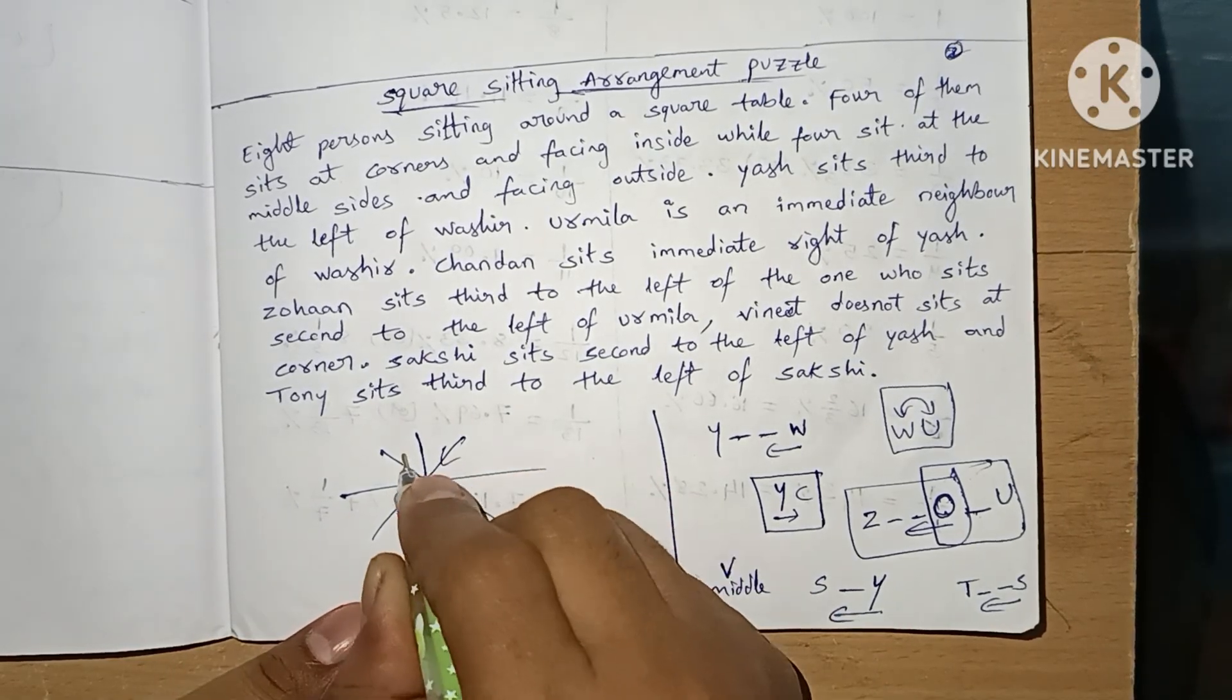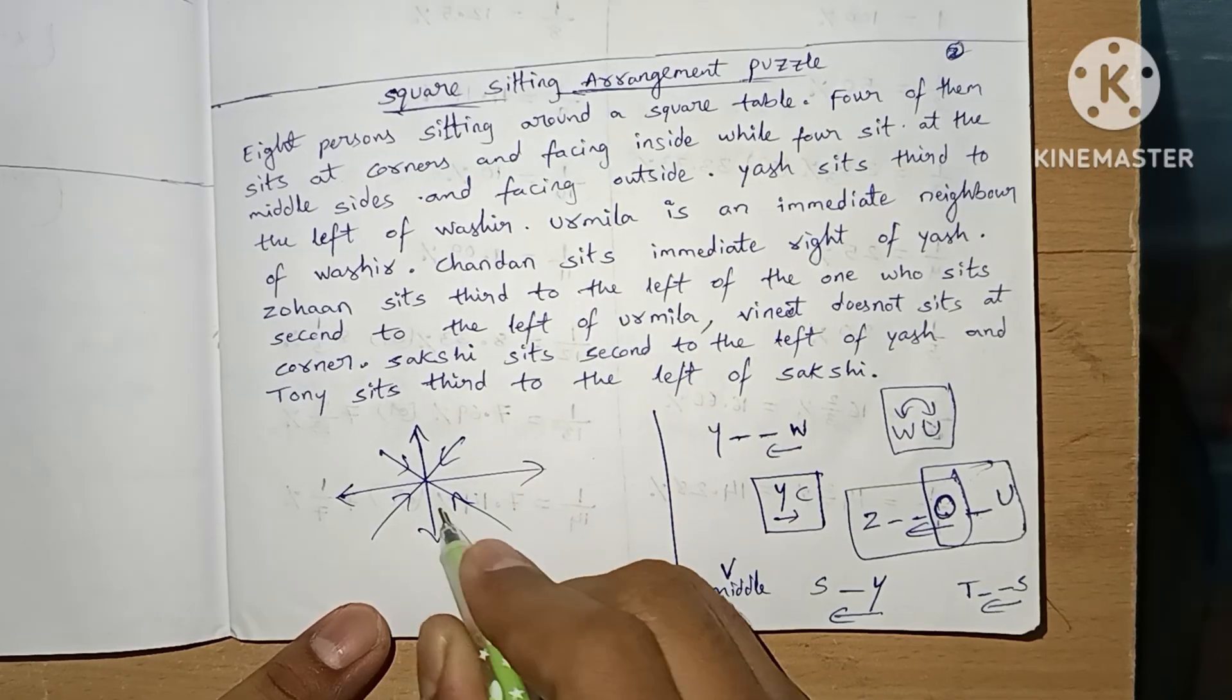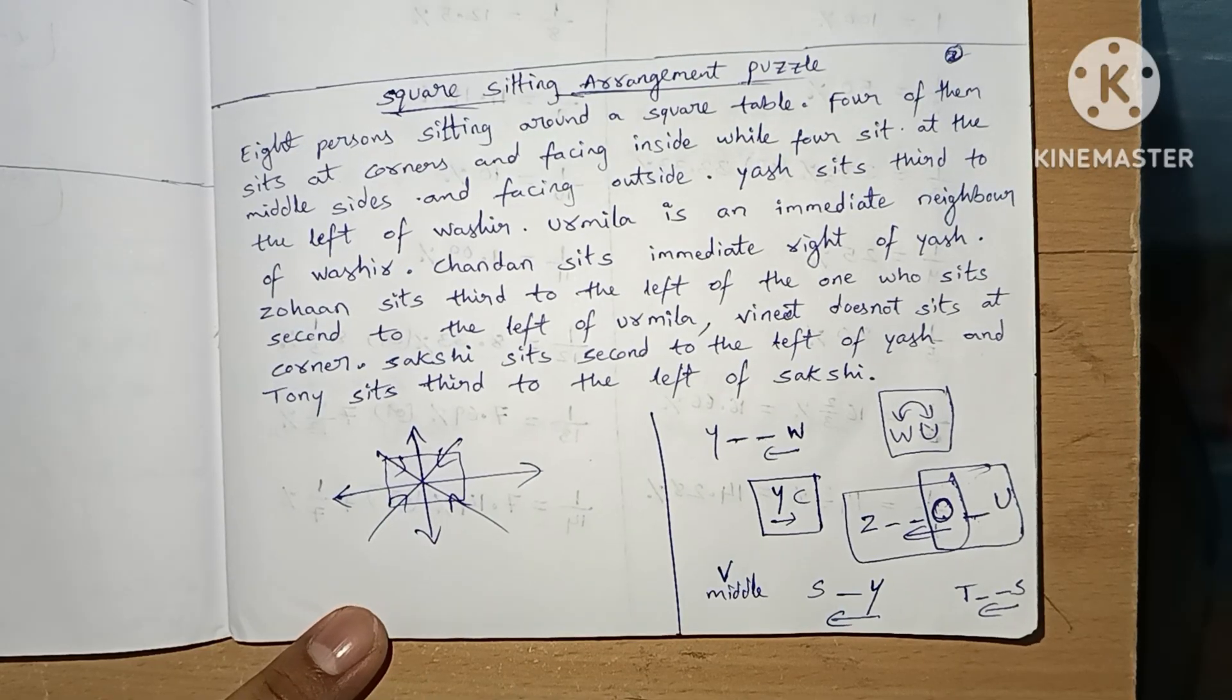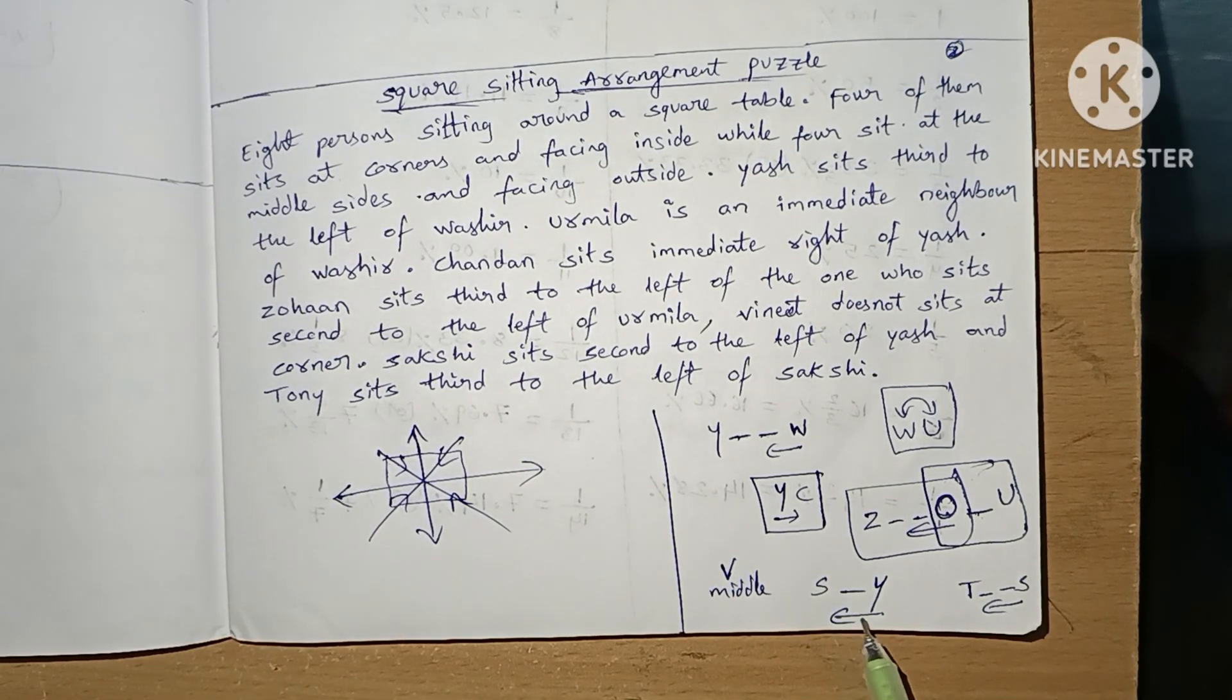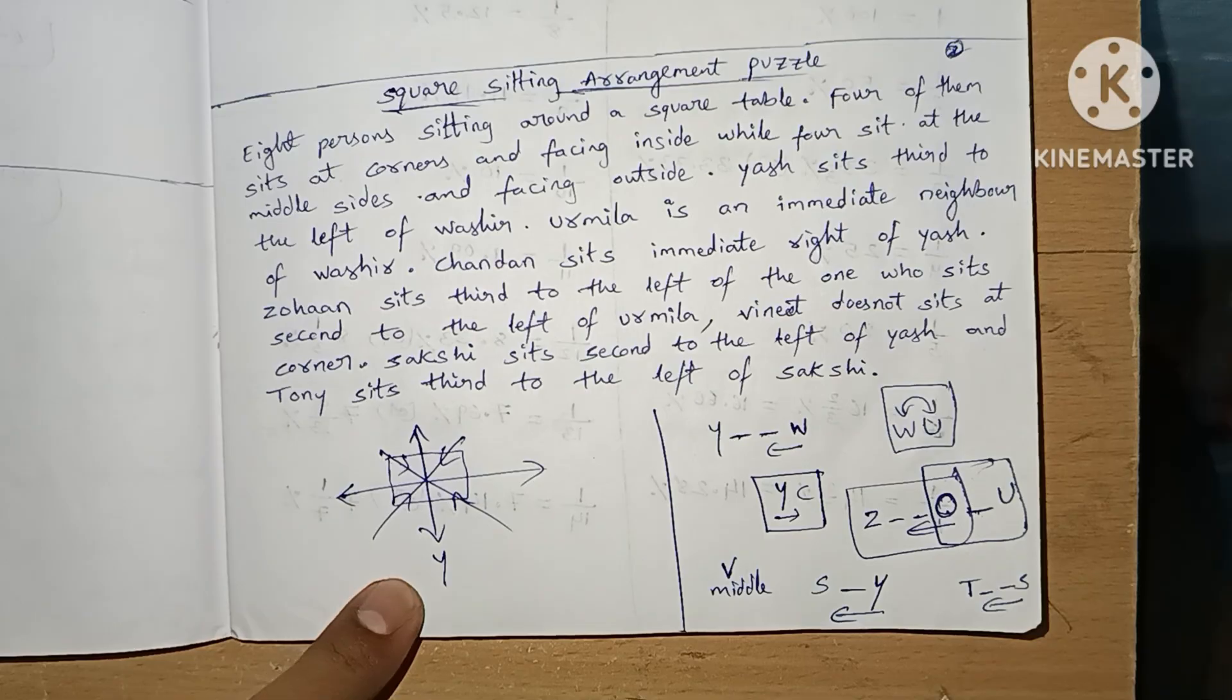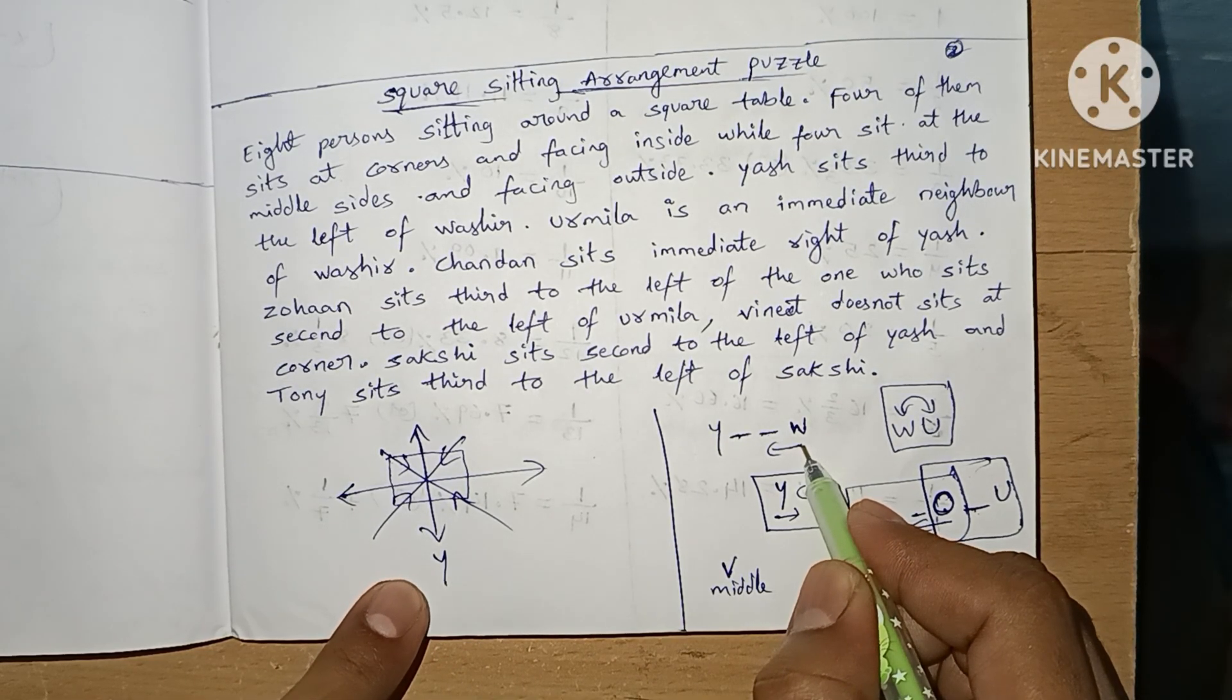Corners are facing inside, middle are facing outside. Why I draw this one? It is nothing but a square. Let's see a rough square. So I will draw like this. From where to start? There is Y is more here. So let it be Y here. If it is Y, Y is third to the left of W, means here one, two, third.